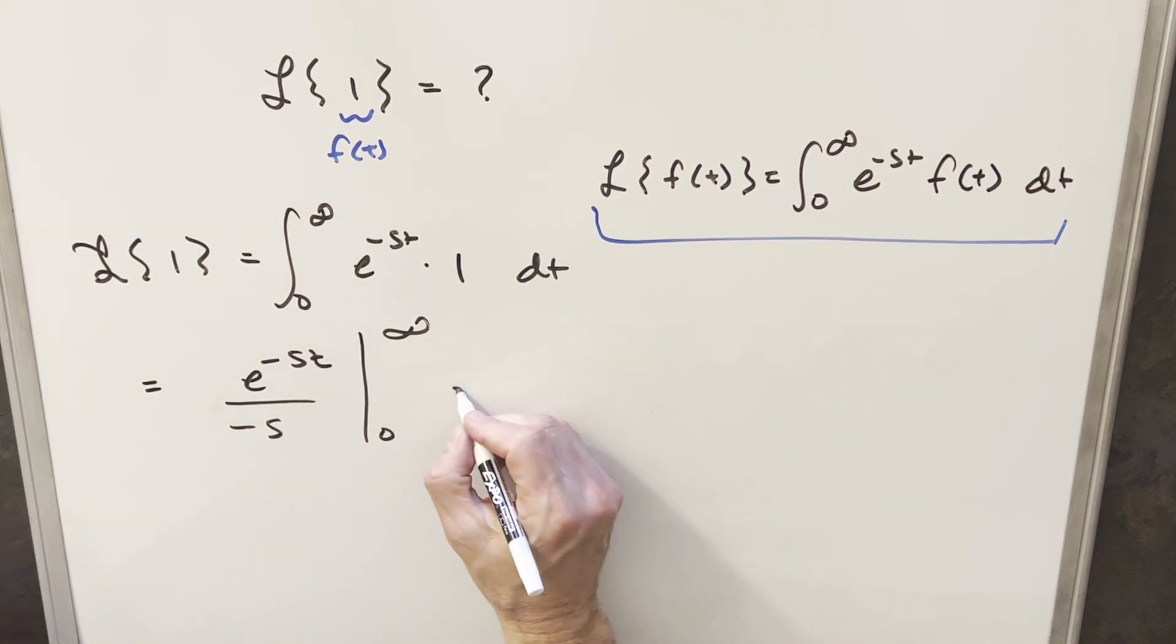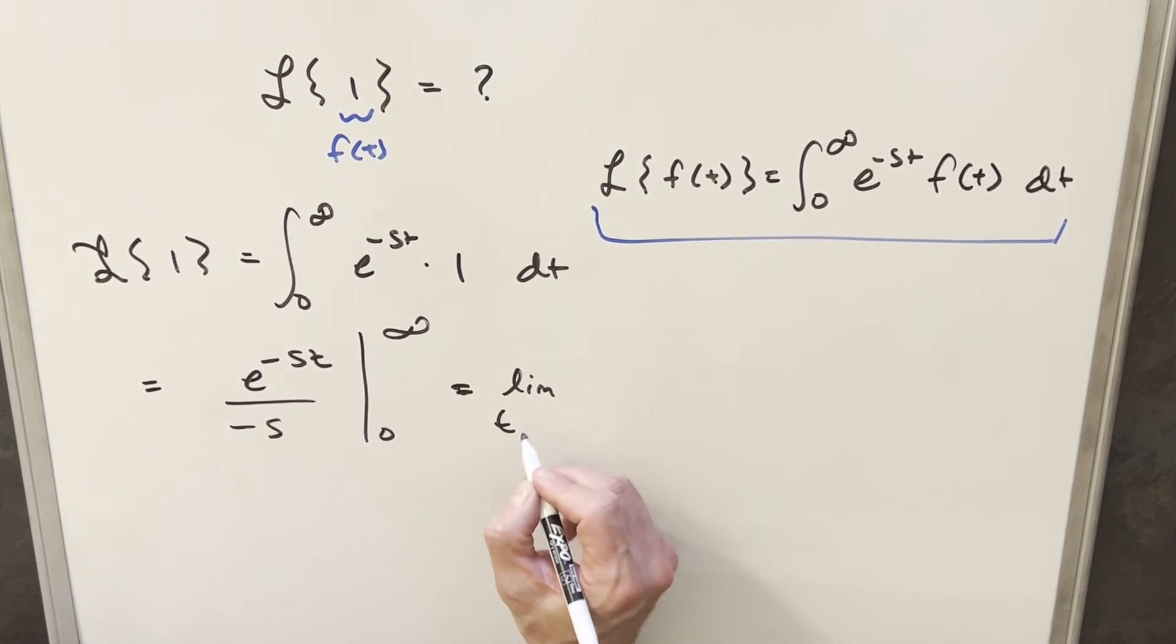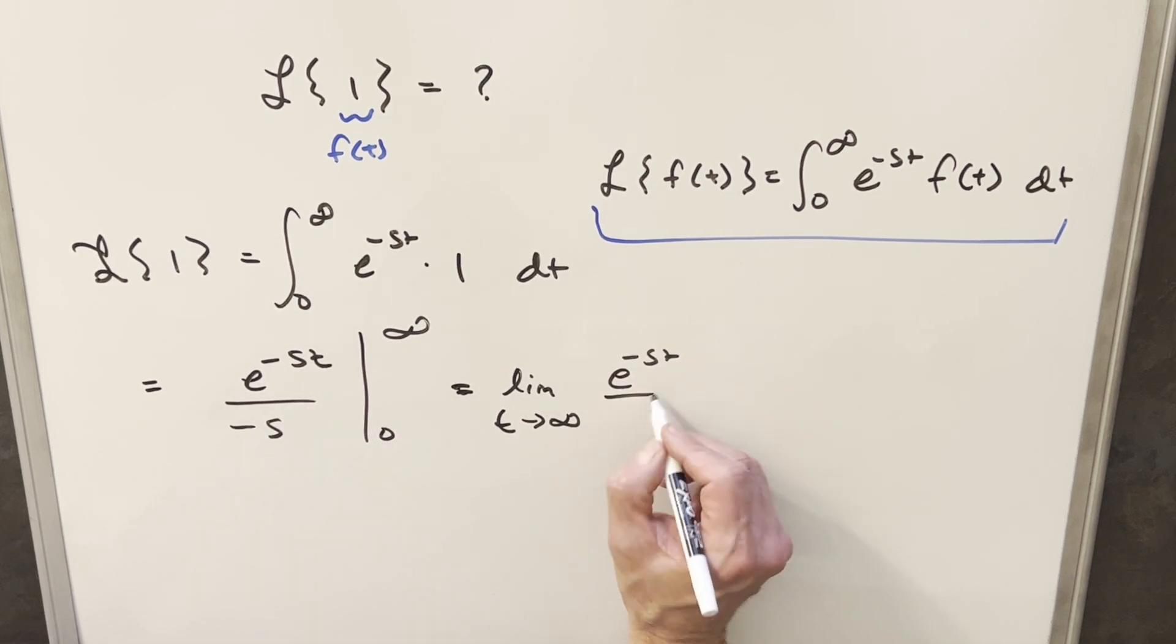But when I do this, I just want to be a little careful of this infinity here. So let's write it out as a limit. For this, we're looking at the limit as t approaches infinity of this business, e to the minus st over minus s. And then we'll plug in our zero to get this other part.